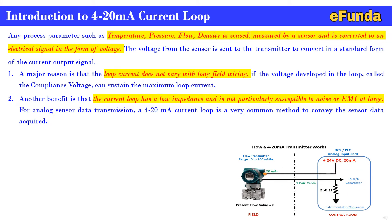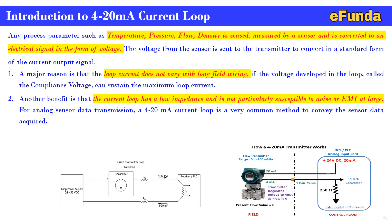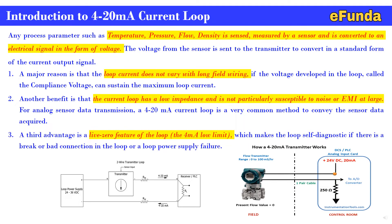For analog sensor data transmission, the 4 to 20 milliamp current loop is a very common method to convey sensor data. One can refer to the two-wire loop transmitter where the power supply is connected to the transmitter and through a resistor is received at the PLC card or system side. A third advantage is the live zero feature — the 4 milliamp low limit makes the loop self-diagnostic in case of a break, bad connection, or power supply failure.